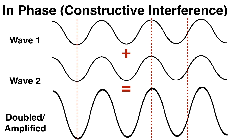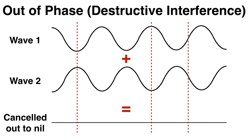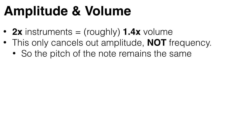And interestingly, in theory, it's possible to sync up the sound waves from the two instruments perfectly so that they exactly cancel each other out, and you hear complete silence, even though both violins are playing. This is called phase cancellation, and it's how noise cancelling headphones work.